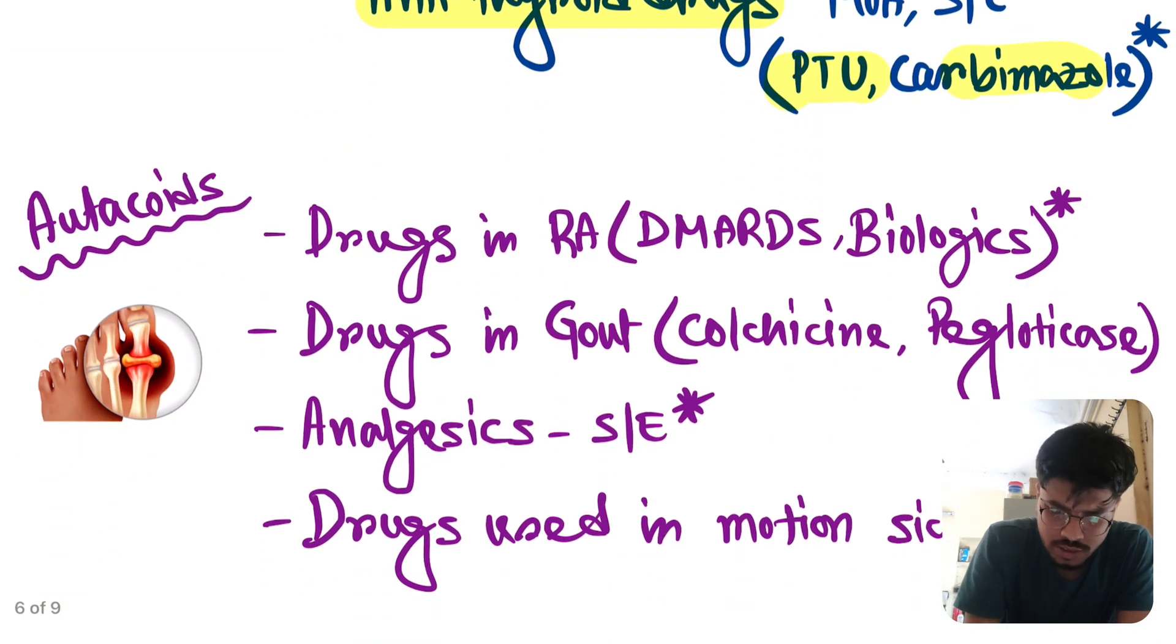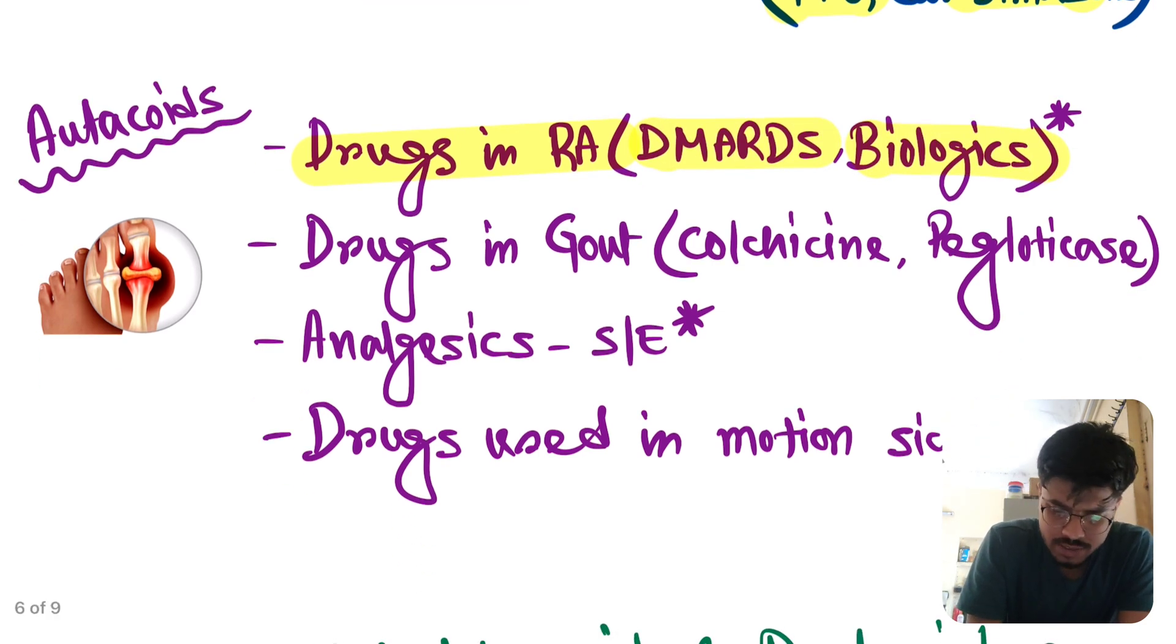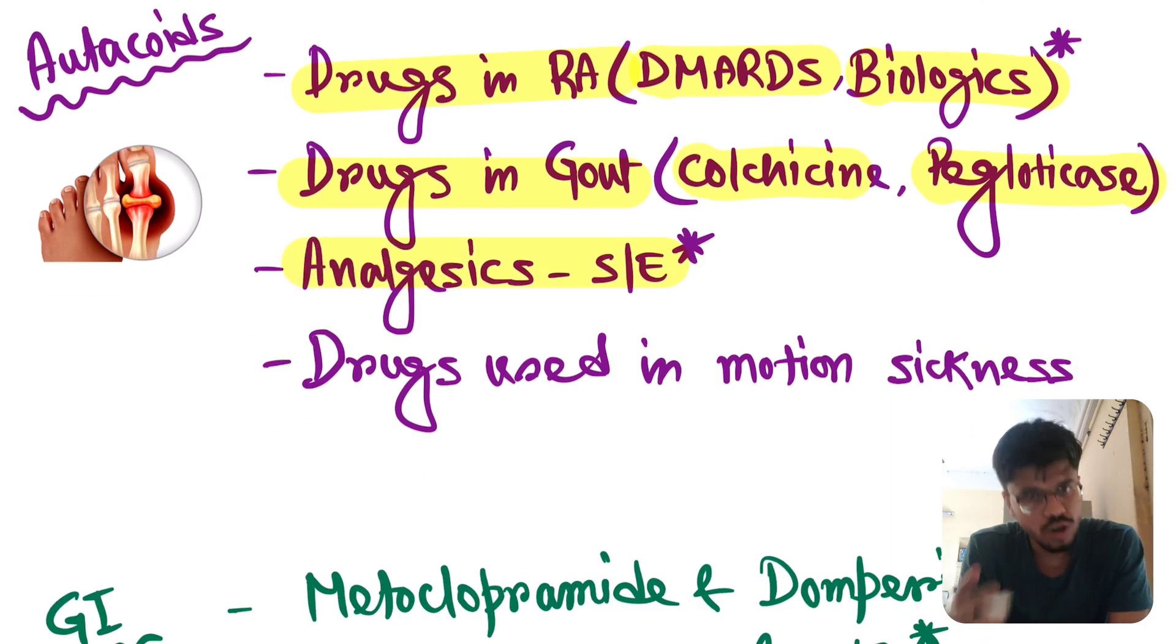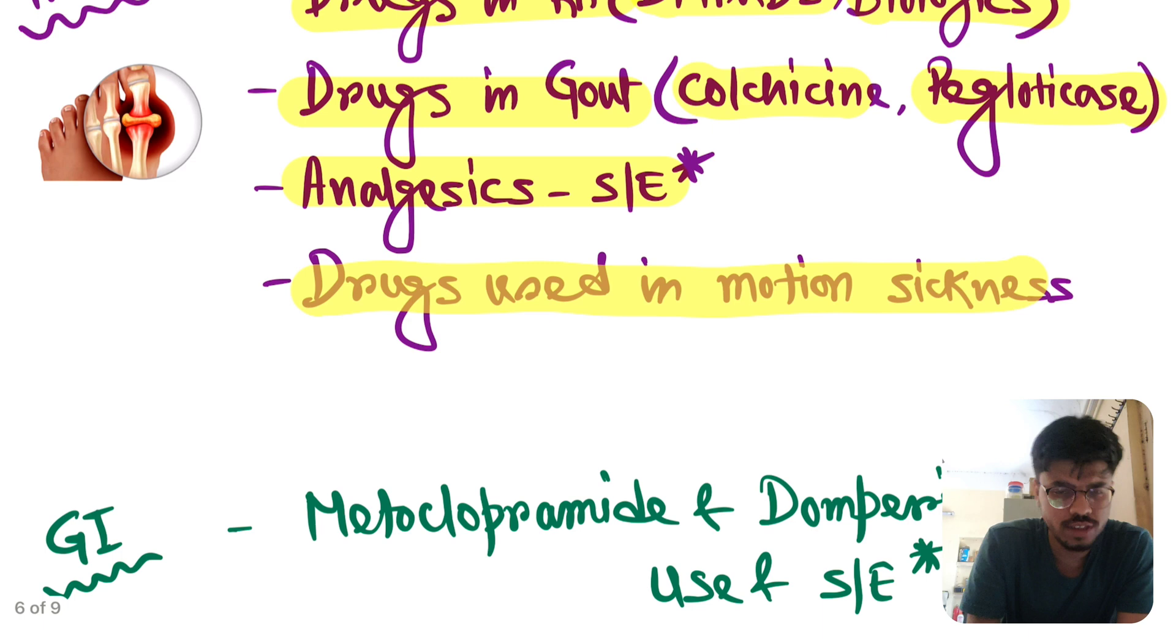In autacoids, drugs in rheumatoid arthritis, DMARDs and biologics. Again important. Drugs in gout, colchicine and pegloticase. Again important topic. Analgesic side effects. Already asked topics. Drugs used in motion sickness. You have to read it because you can get a question from this.